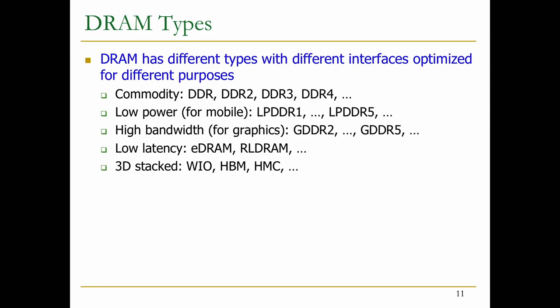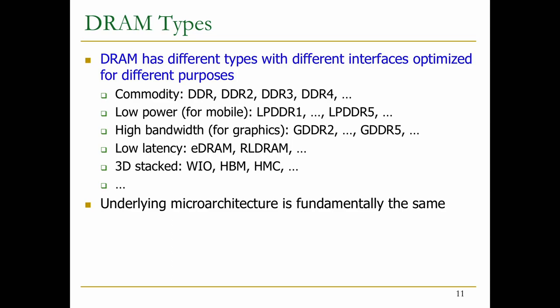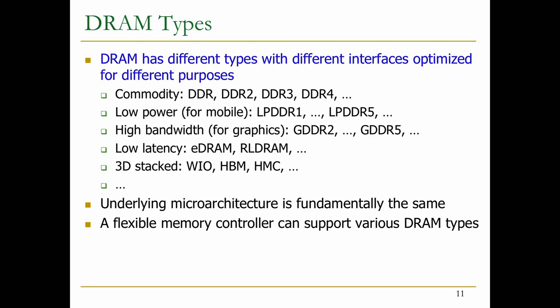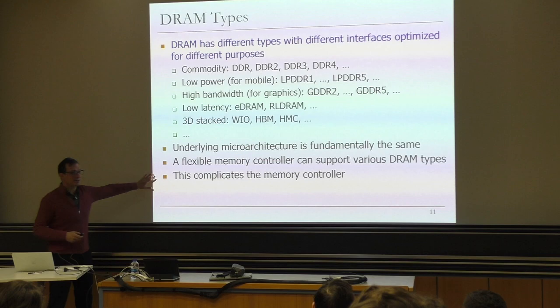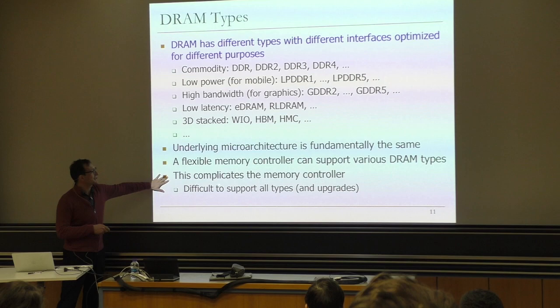The key thing to take away is that the underlying micro-architecture is fundamentally the same in all of these DRAMs. What really differs is the interfaces and the signaling mechanisms at the circuit level. A flexible memory controller ideally would support many of these DRAM types — you could write a lot of code that supports all of them, though it would be a lot of code. This clearly complicates the memory controller, and as a result most memory controllers don't do this.